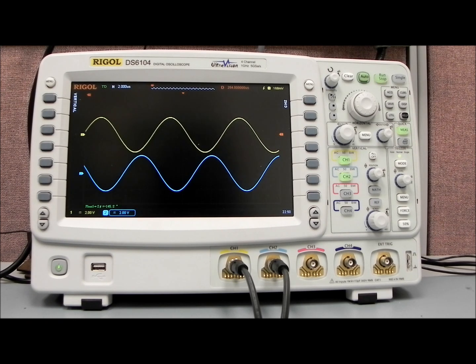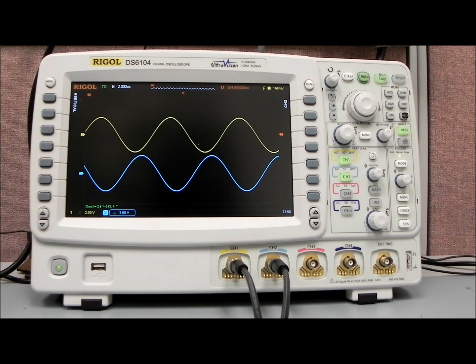So you can also use the automated measurement capability of the instrument, the DS6000, in order to make those phase measurements between channels, which can be extremely useful as well. And quite a bit faster, I think. But the Lissajous curves or the X versus Y mode can also be helpful.